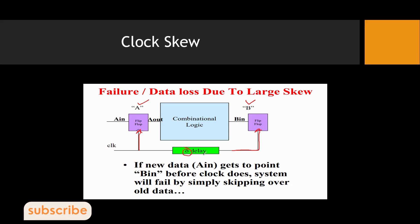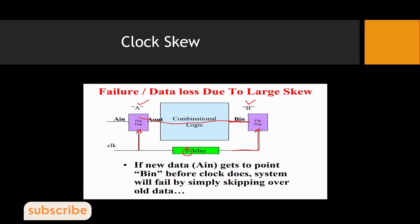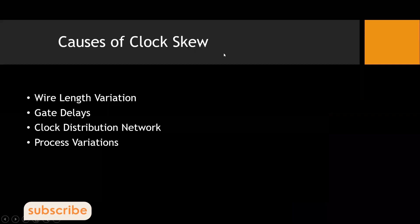What happens is if new data A_in arrives at point B_in before the clock arrives, the system will catch that new data and lose the previous data, because the data is arriving earlier than the clock edge. At the arrival of the clock, whatever data is available will be captured — so there is a chance of failure and loss of data. This is one of the key effects of clock skew.